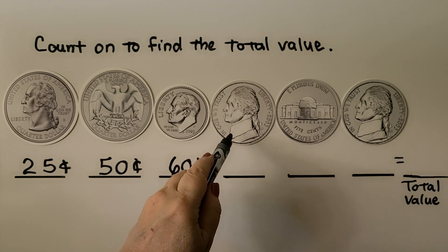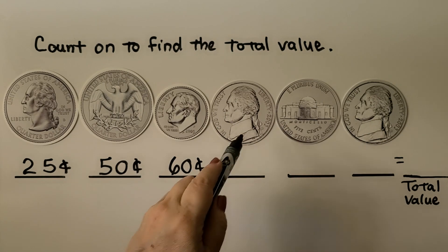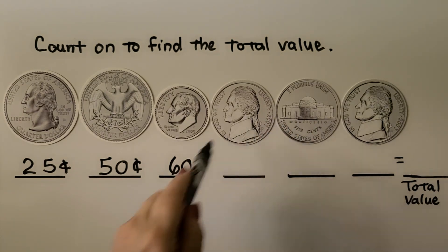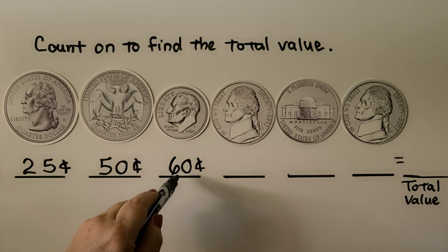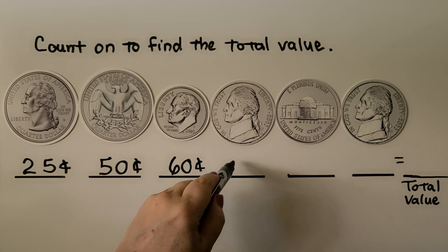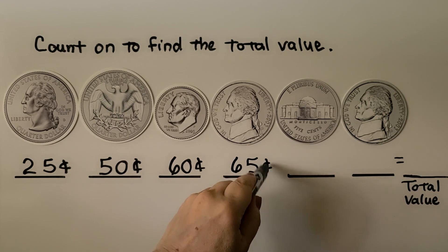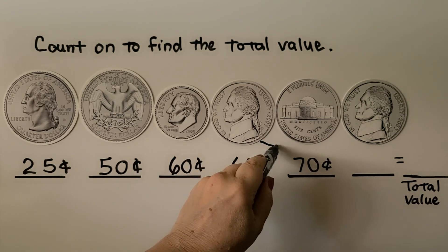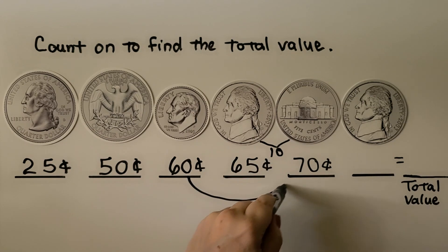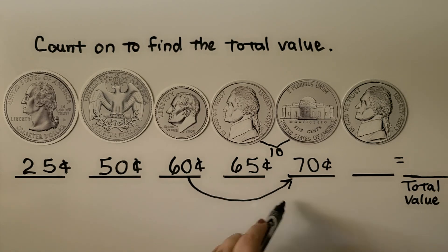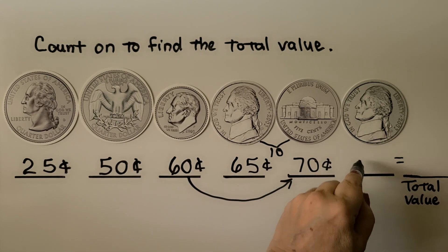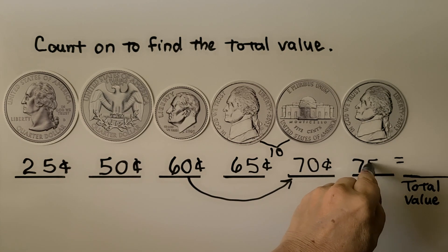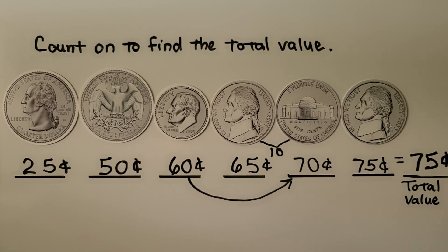Now we're going to add 5 cents, 5 cents, and 5 cents. We can put two fives together as a 10: 60 cents plus 5 cents is 65 cents, and 5 more is 70 cents. Or we could go straight from 60 cents to 70 cents. Now we add another nickel — that's another 5 cents. From 70, we're at 75 cents. The total value is 75 cents. We remember to use the cent symbol.